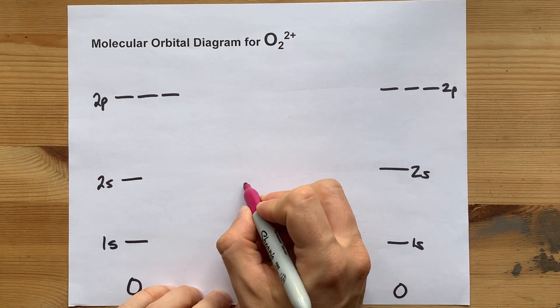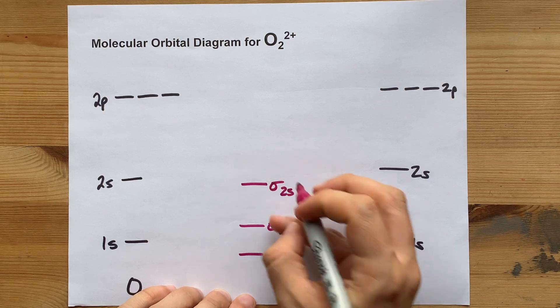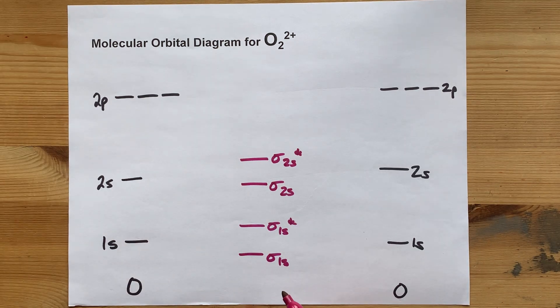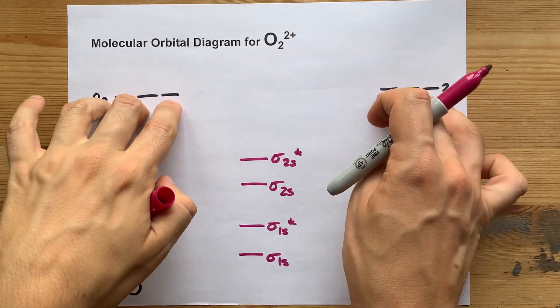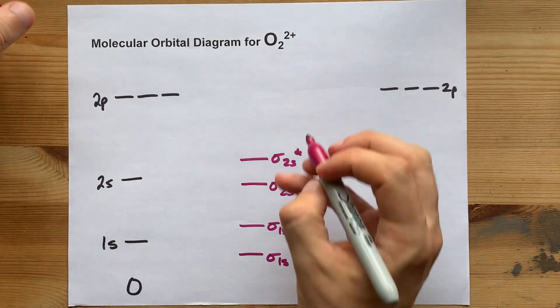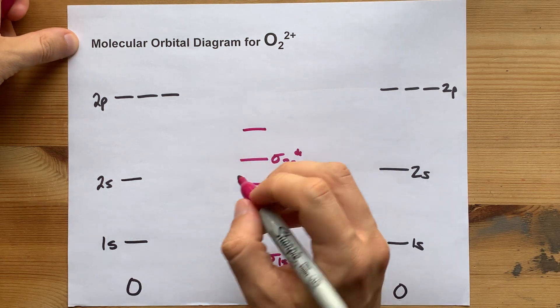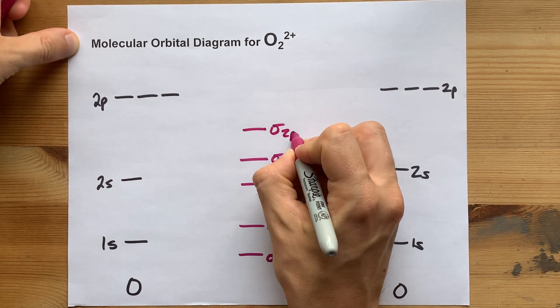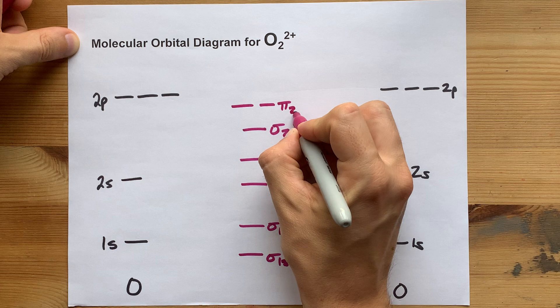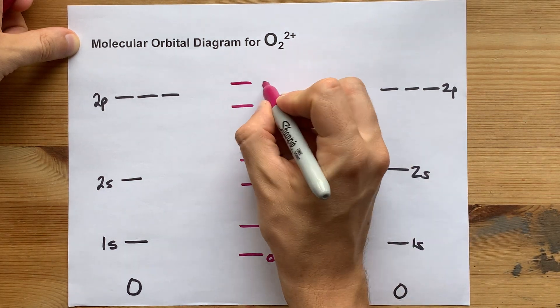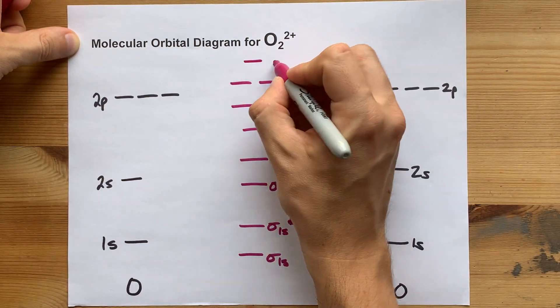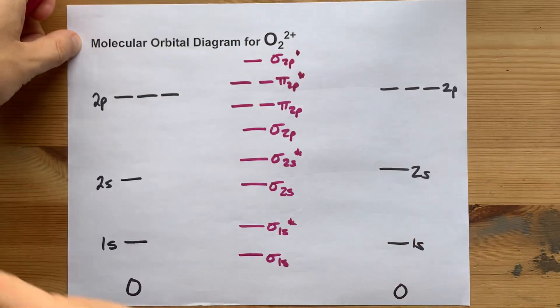The 2s's will overlap in a similar way. You get a sigma 2s bonding orbital and a sigma 2s antibonding orbital. When the 2p orbitals overlap with each other in oxygen or fluorine or neon, your lowest energy molecular orbital is going to be a sigma 2p bonding orbital. Then you have 2 pi 2p bonding orbitals, 2 pi 2p antibonding orbitals, and a sigma 2p antibonding orbital as well.